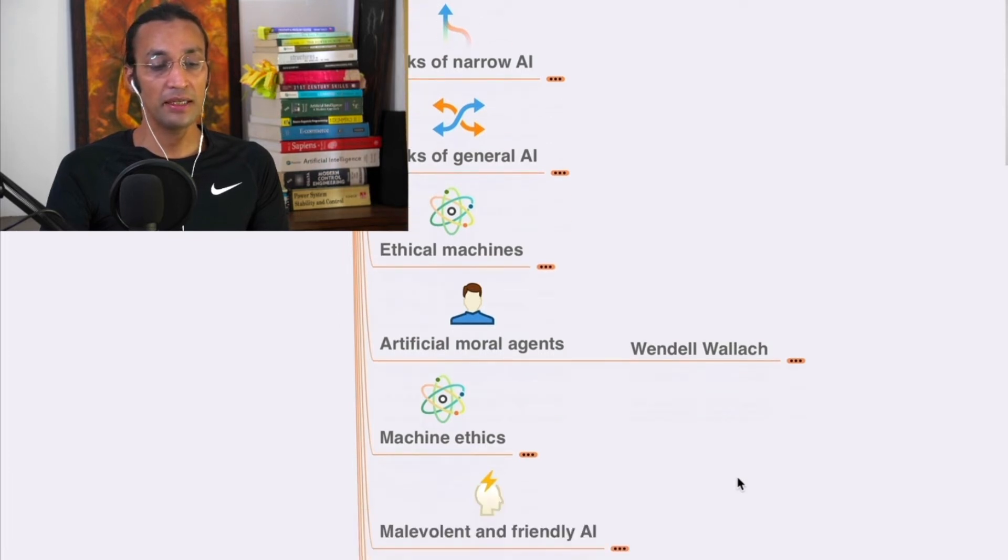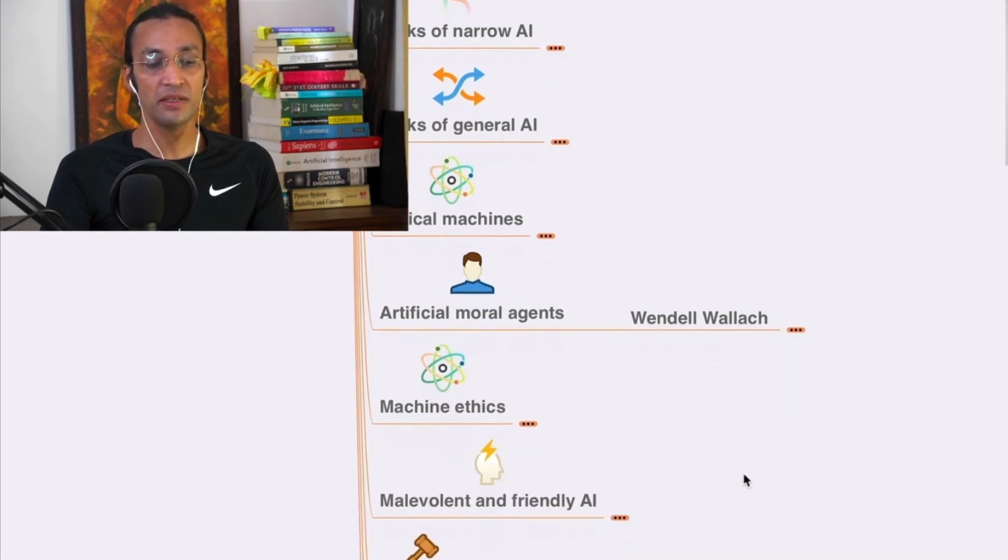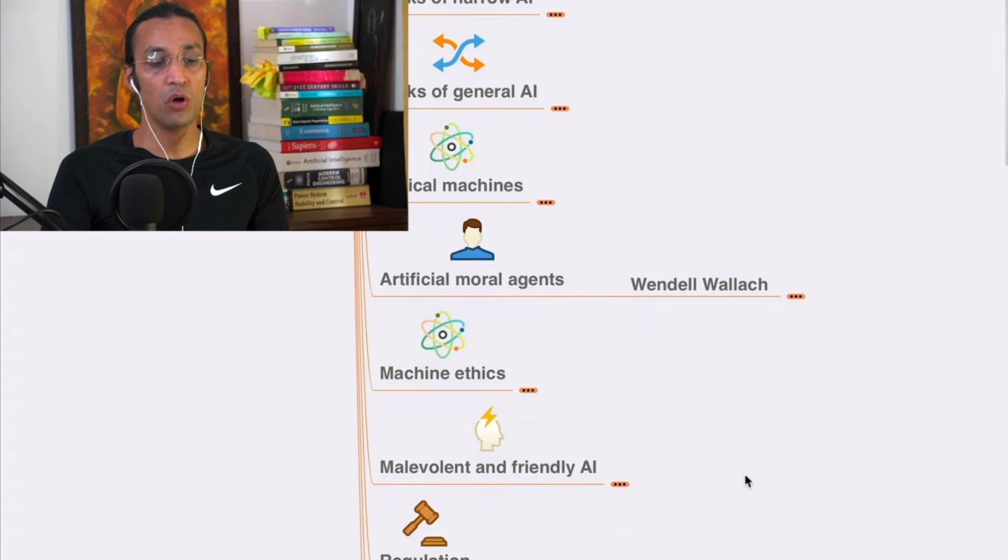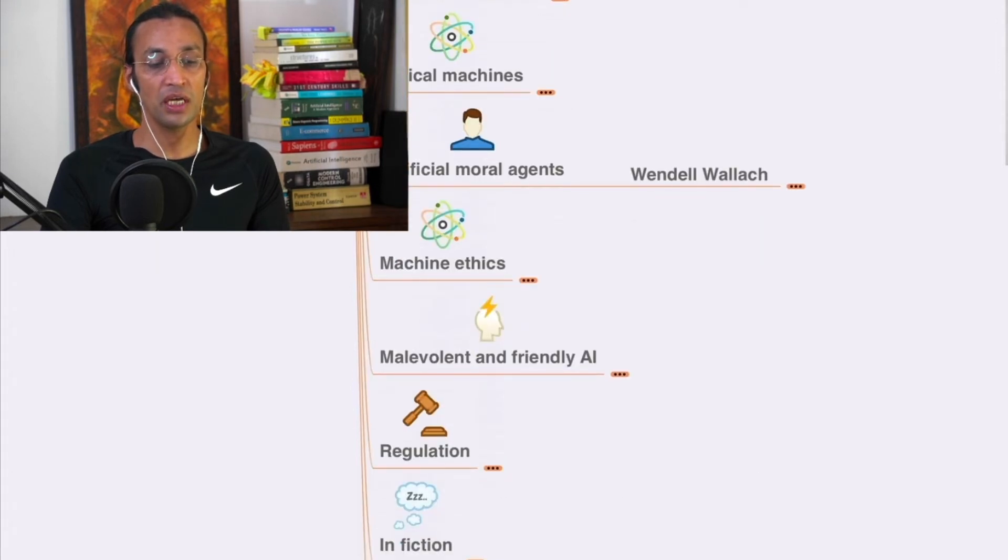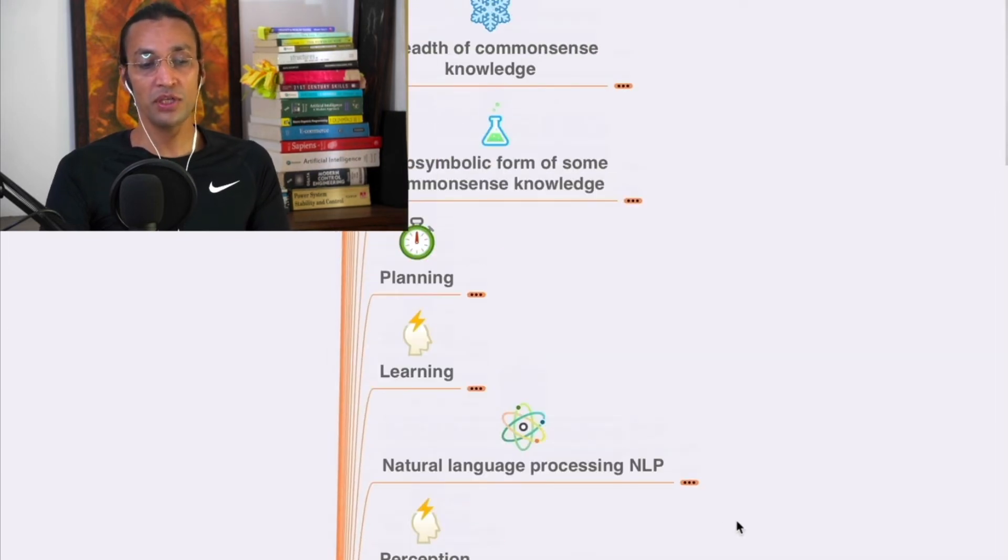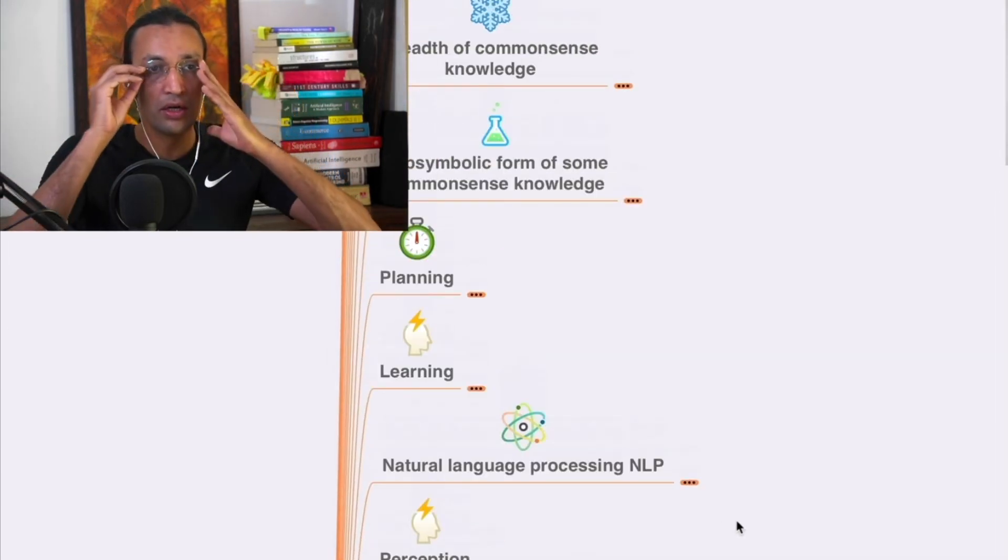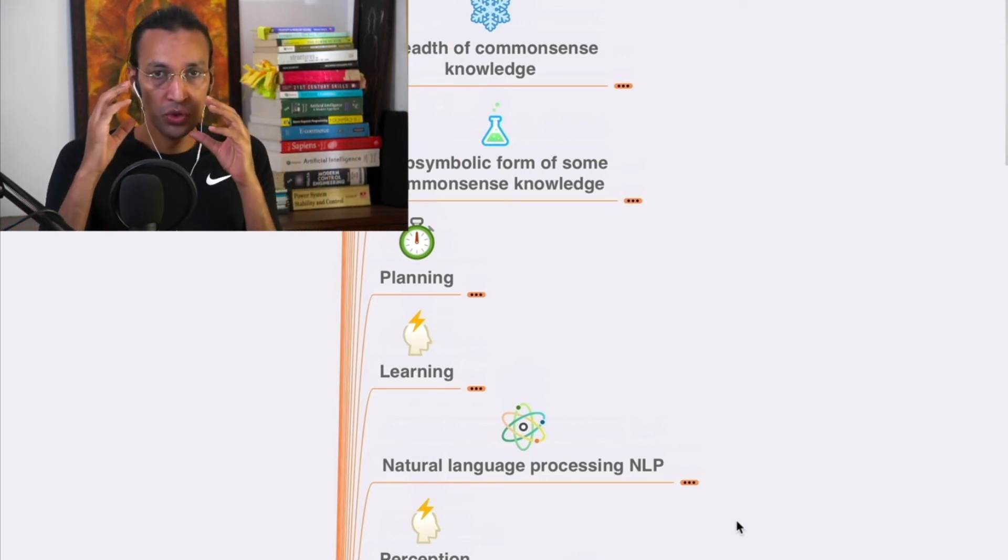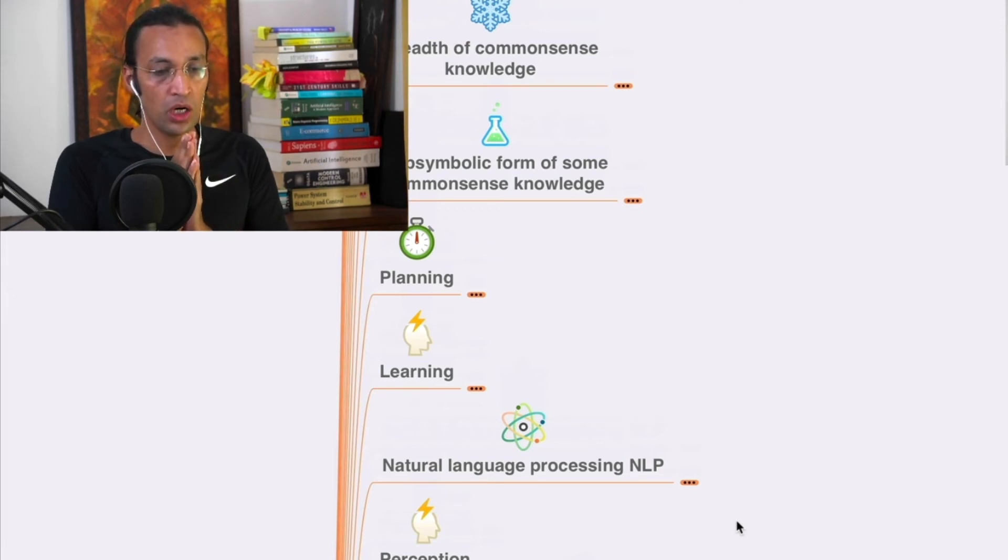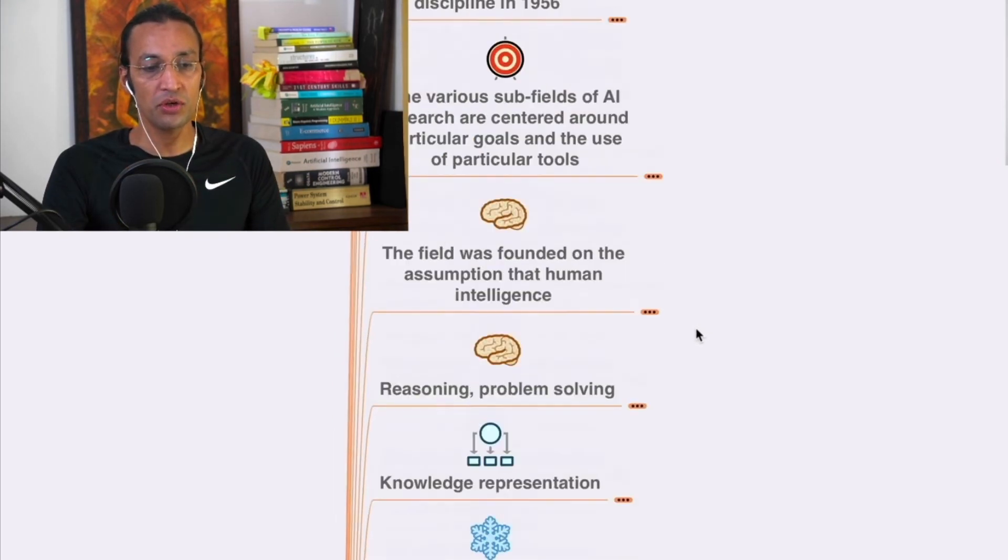We'll go to machine ethics, malevolent and friendly AI, regulations, and fiction. We'll also go to references. This is a deep course on artificial intelligence which you will learn in this series, going step by step so you can understand the history, present, and future, and all the concepts and founders.